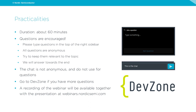The webinar will be overall about 60 minutes. Questions are highly encouraged. For questions, use the question function — it is to the top right of your sidebar. All questions there are anonymous. The chat is not anonymous. You are welcome to use the chat, but for the Q&A at the end, we will look at the questions, not the chat. If you have more questions after the webinar, go to DevZone — we have a team of very capable engineers there. A recording will be available later on DevZone and at webinars.nordicsemi.com.